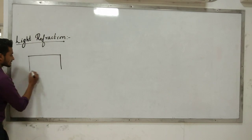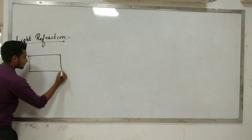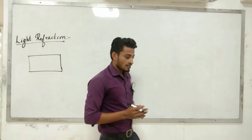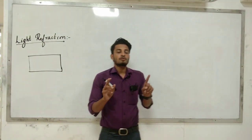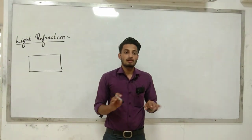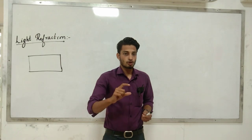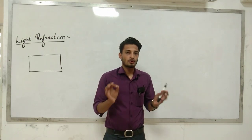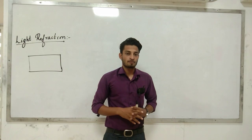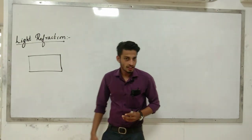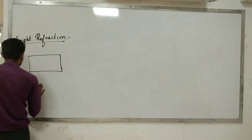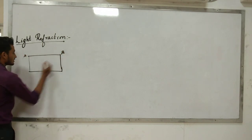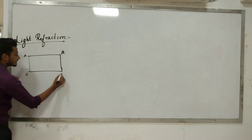This activity uses a rectangular glass slab. Take a rectangular glass slab. We name it as A, B, C, D — labeling each corner of the slab. That's why we are going to study refraction using this setup.